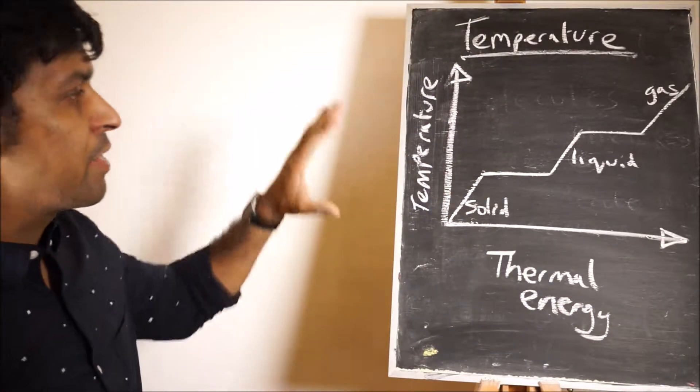Now the physical states of matter are solid, liquid and gas. To go from a solid to a liquid is called melting. From a liquid to a gas is called boiling. From a gas to a liquid is called condensing, and from a liquid to a solid is called freezing.